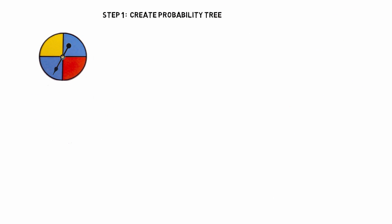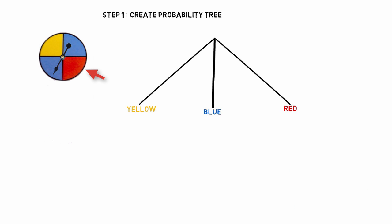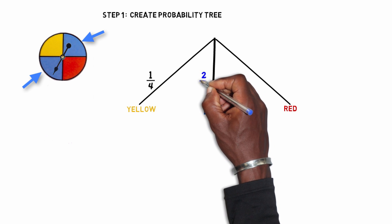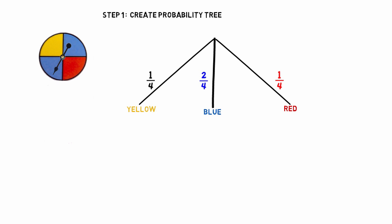Step one: make a probability tree to fill in the probabilities for all the various things that could happen when you spin the spinner twice. There are three colors the spinner can land on, but one color has a better chance than the others. The colors are yellow, blue, and red. The chance of landing on yellow is one out of four, blue is two out of four, and red is one out of four on your first spin.